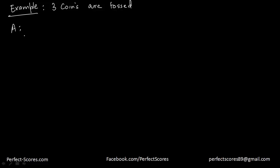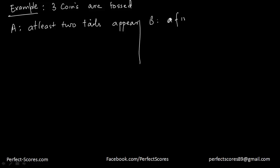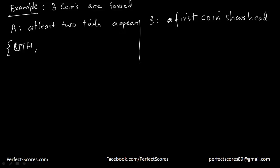Three coins are tossed and I talk about two events that can happen. Event A: at least two tails appear. The next event I would like to define is that the first coin shows head. So if at least two tails should appear, my sample space is: I can get two tails and one head, first tail then head then tail, first head then two tails, or all three tails.